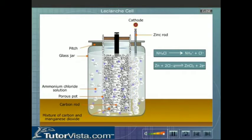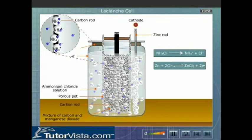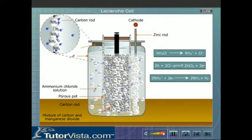On the other hand, ammonium ions move to the carbon rod. The free ions of the carbon rod neutralize the ammonium ions forming ammonia and hydrogen gas.